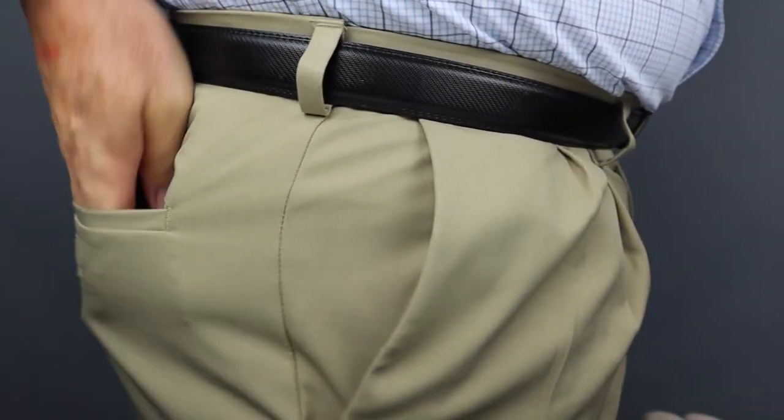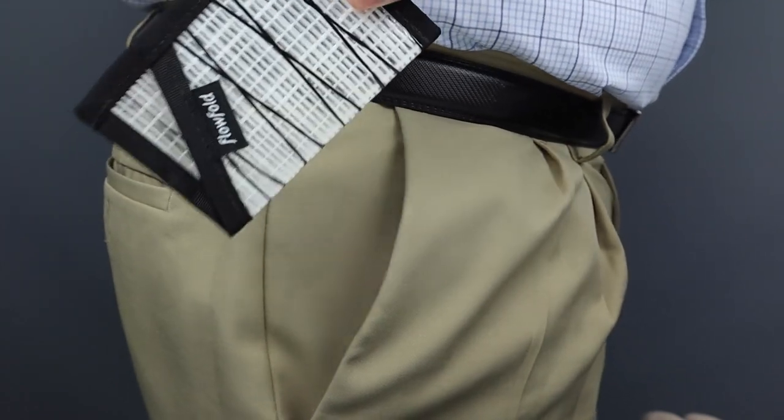The name Flow Fold comes from layers of rock that fold smoothly over time without breaking. To the company, that represents strength and flexibility, which all their products really have. Now let's move on to the final score.